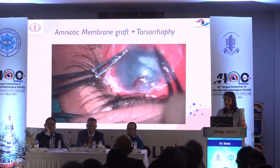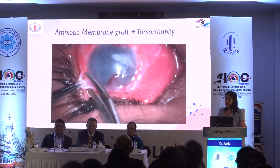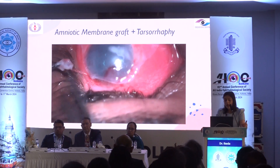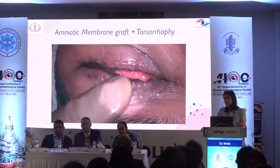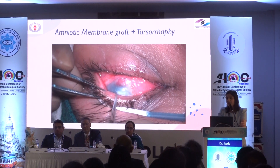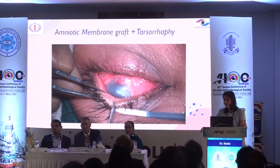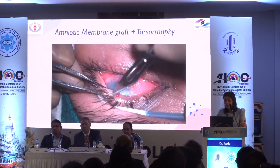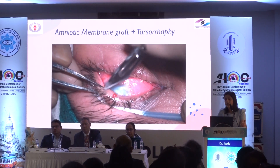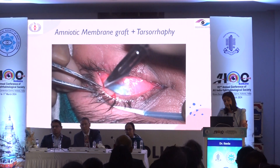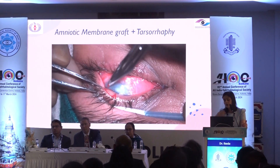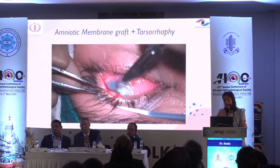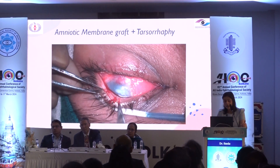We can use a suture on the side if needed or a bandage contact lens on top if the amniotic membrane may not stay. In cases with inferior limbal ischemia, scleral ischemia, large epithelial defects, or signs of exposure, tarsorrhaphy is very helpful — it prevents exposure and, since the tarsal conjunctiva comes closer to the bulbar conjunctiva, it promotes vascularization and epithelial healing.